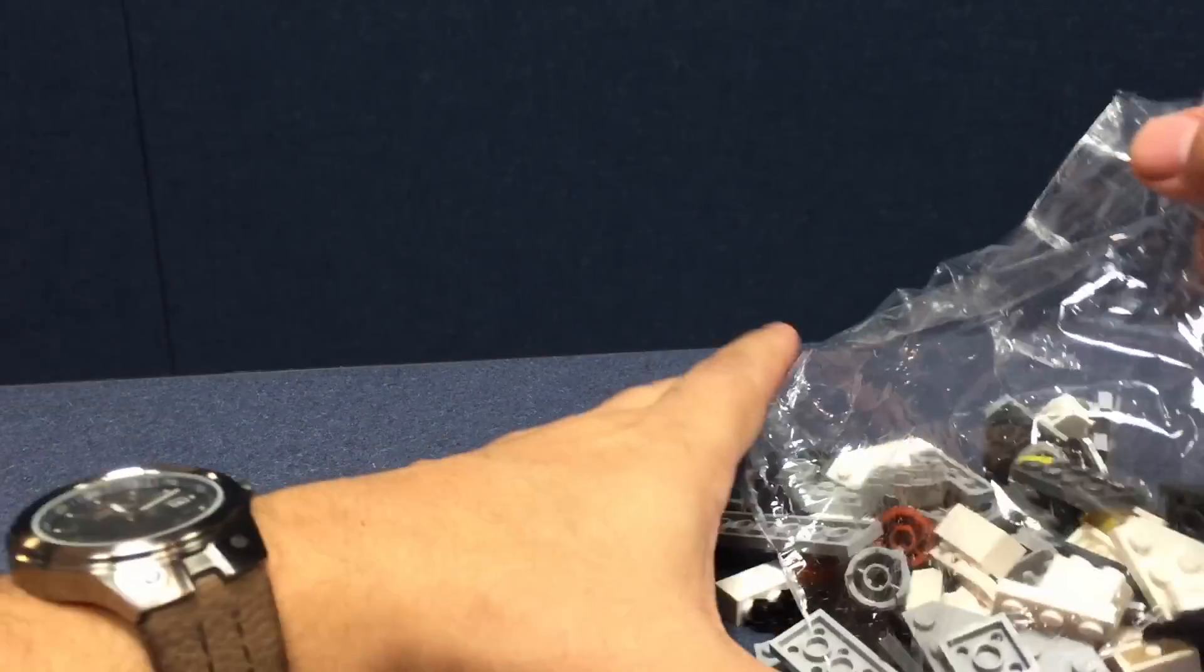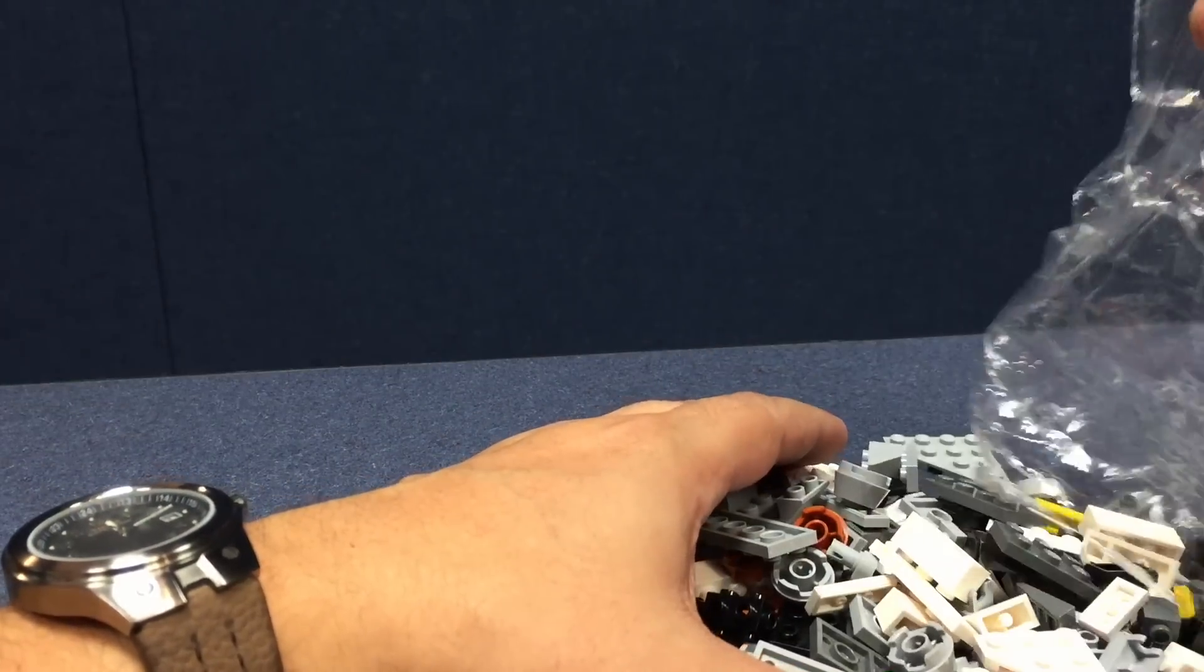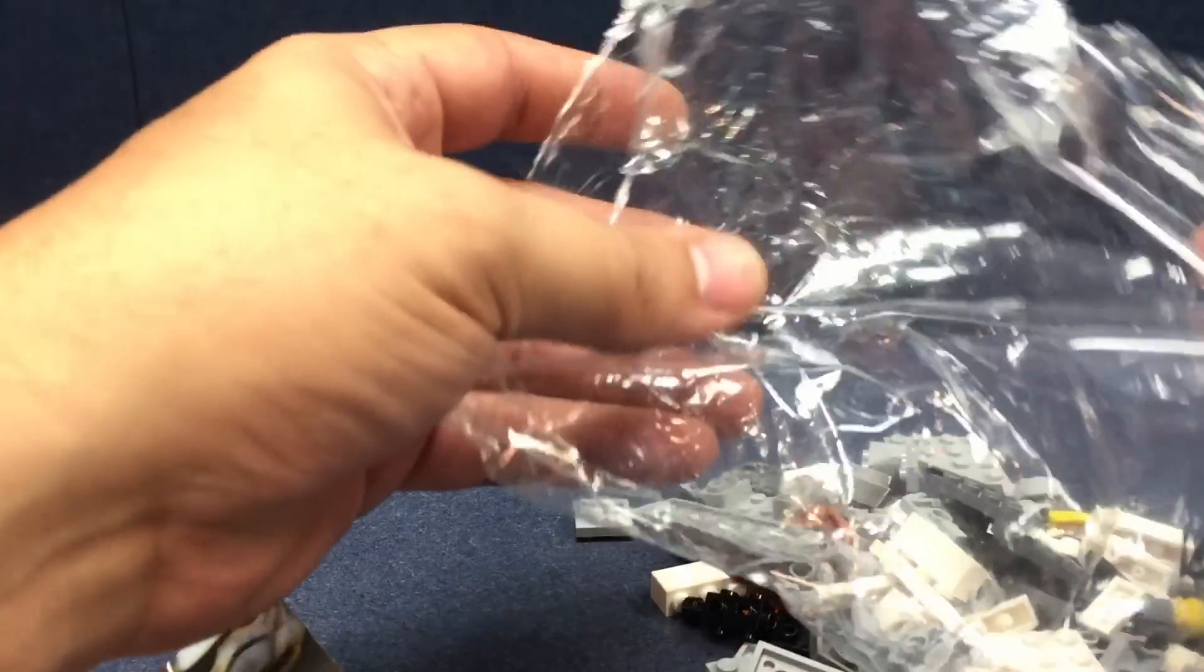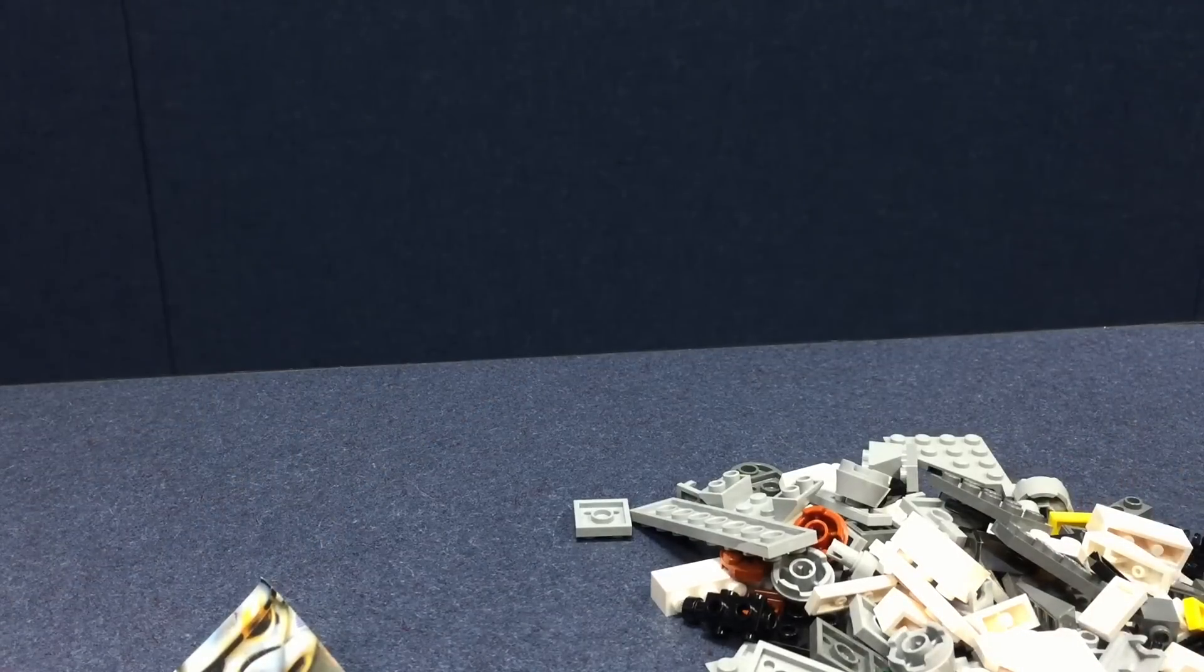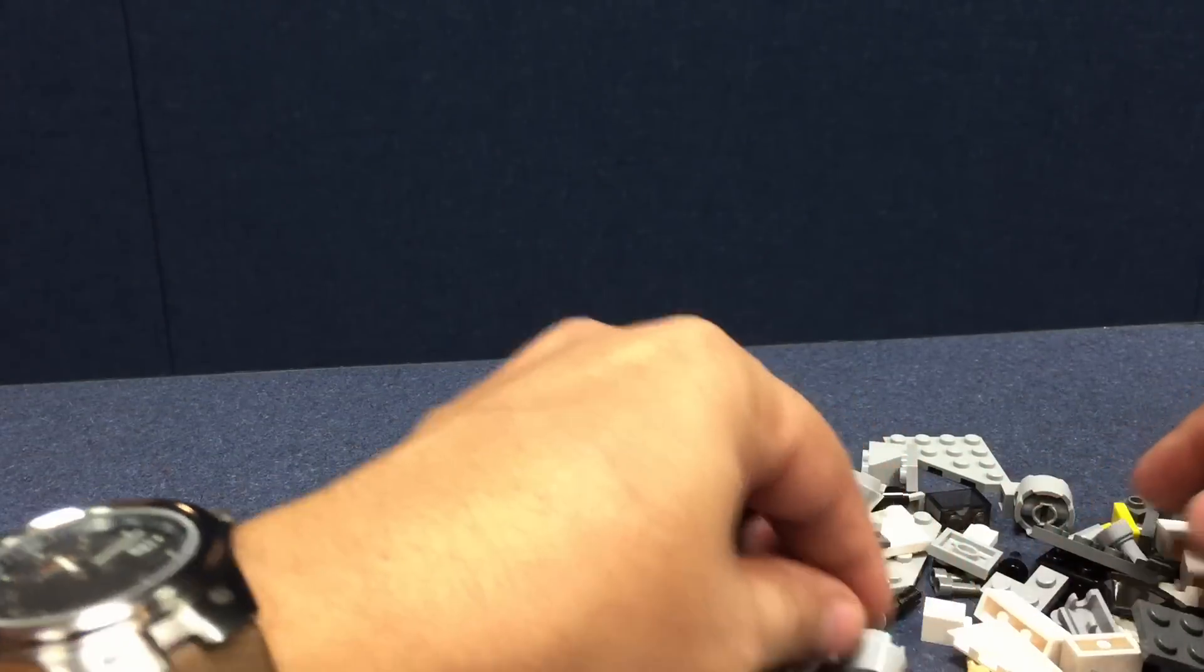Let's go ahead and put Chopper together first. Chopper is their little astromech droid. His designation is C1-10P, which, if you write that out, looks like the word chop, and that's where his name comes from.